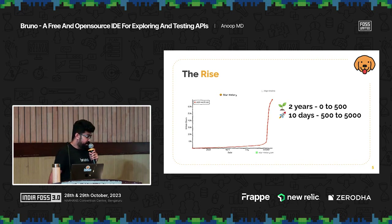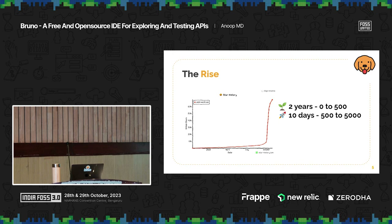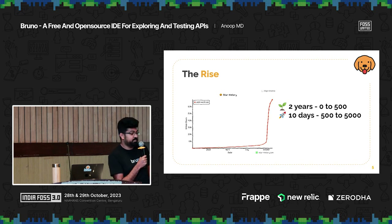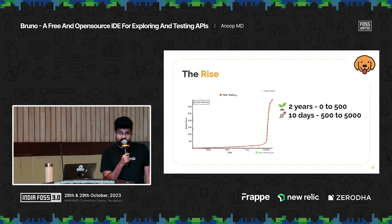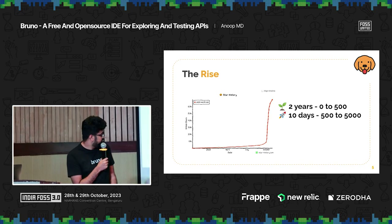I would not be here if something crazy hadn't happened on September 28th. I've been working on this project for two years. It took us two years to go from zero to 500 stars. Then in the next 10 days, we went from 500 to 5,000. And today we are at 7,000 GitHub stars.